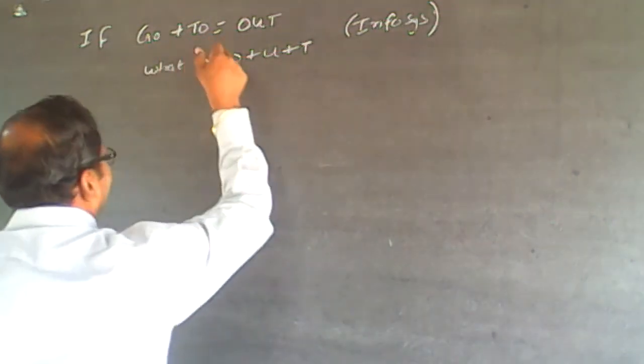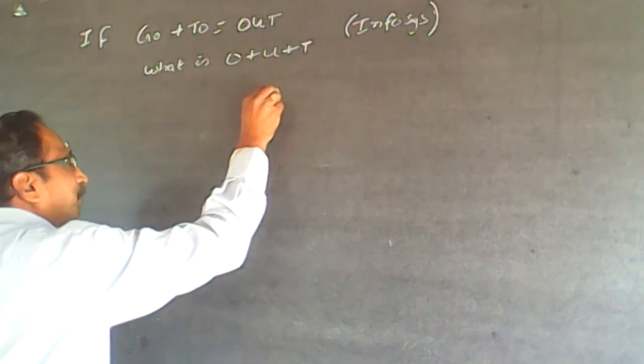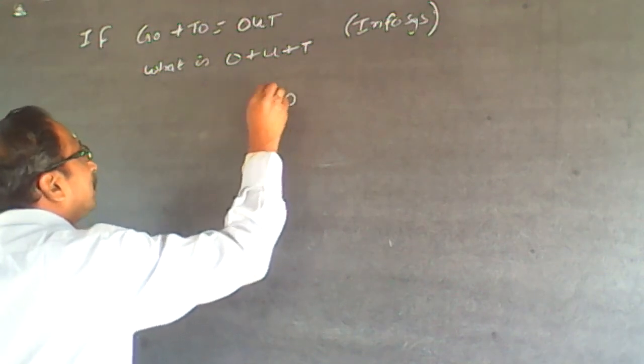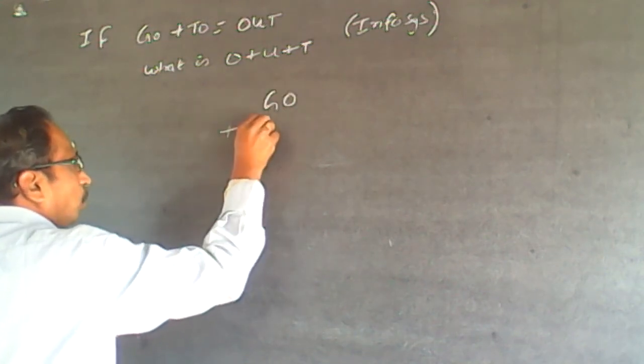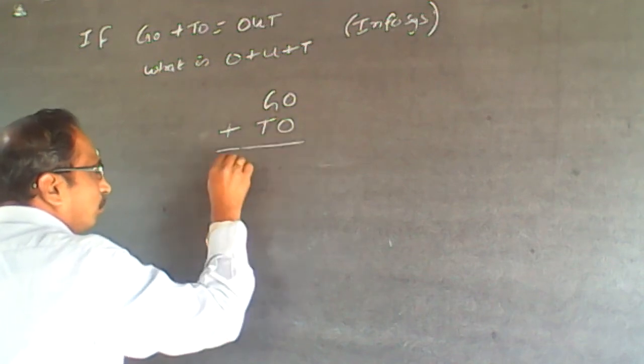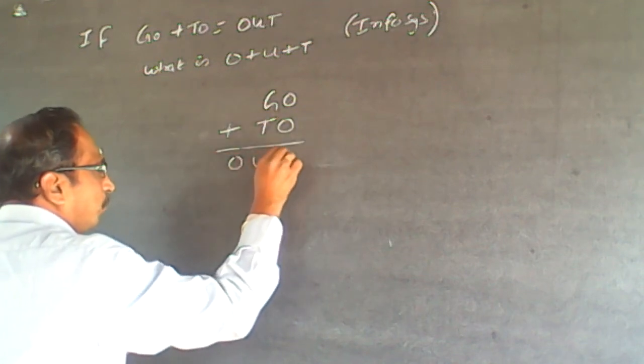See, we have to write it like this. It will be very simple. So, GO plus TO will be equal to OUT.